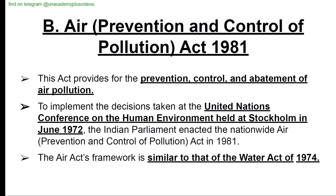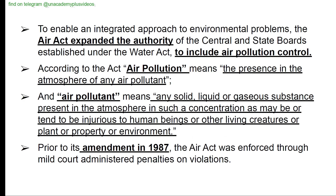Air Prevention and Control of Pollution Act, 1981: This Act provides for the prevention, control, and abatement of air pollution. To implement decisions taken at the United Nations Conference on the Human Environment (Stockholm, June 1972), the Indian Parliament enacted this Act in 1981. Its framework is similar to the Water Act of 1974. The Air Act expanded the authority of the Central and State Boards to include air pollution control. Air pollution is defined as the presence in the atmosphere of any air pollutant — meaning any solid, liquid, or gaseous substance in such concentrations as may be injurious to human beings, other living creatures, plants, property, or the environment. Prior to the 1987 amendment, the Act was enforced through mild court-administered penalties.